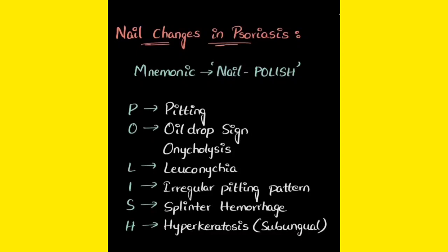P means pitting — there are small dots that happen on the nails, that is known as pitting. O means oil drop sign — that is an oil drop-like appearance that can be seen on the nail. I will show you pictures of all these things. L means onycholysis — the nail comes out from its bed, that is onycholysis.